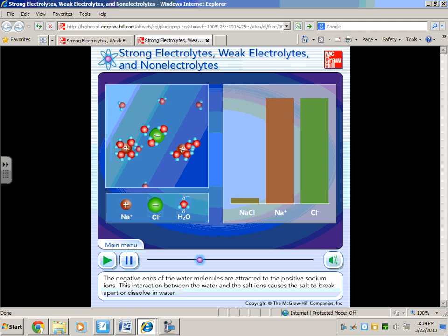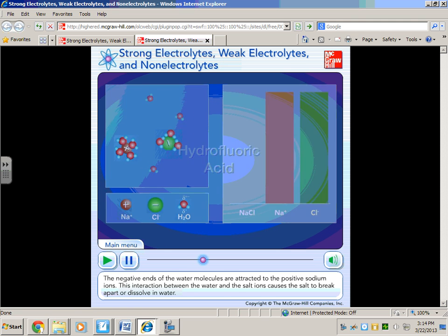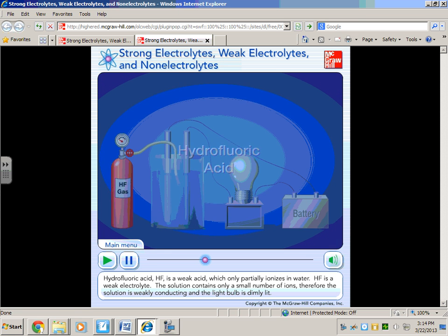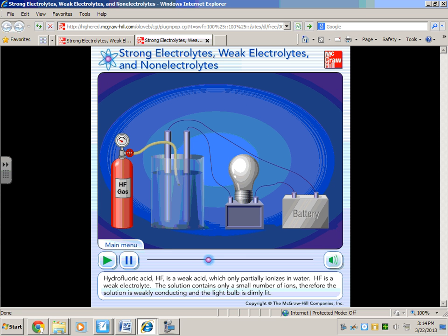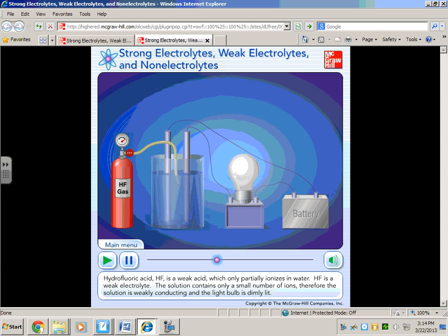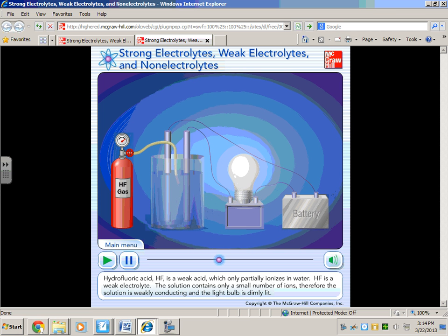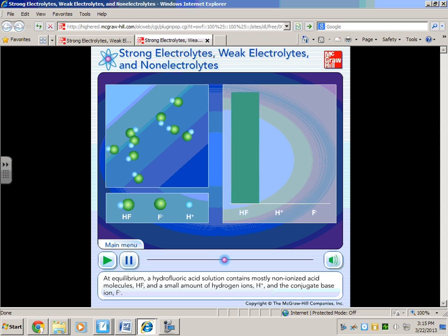When we use hydrofluoric acid, it doesn't ionize completely. It's a weak acid and also a weak electrolyte. You see the light bulb goes on but it's dim. The solution contains only a small number of ions, so it's weakly conducting electricity. At equilibrium, this solution is mostly non-ionized, about one in every hundred or thousand split apart into H+ and F-.